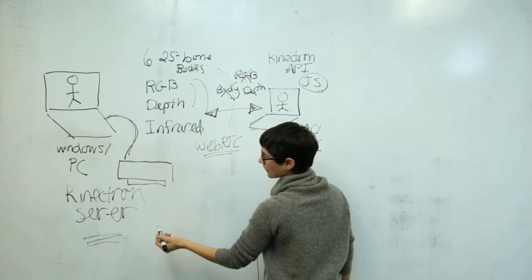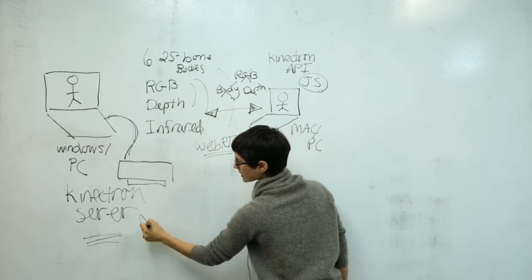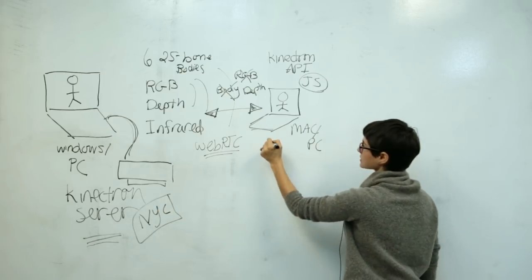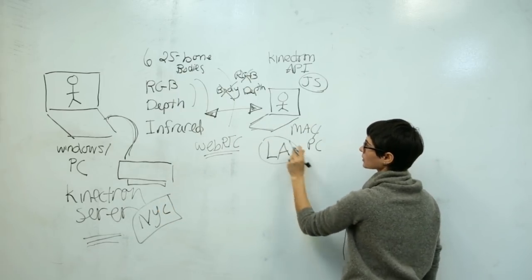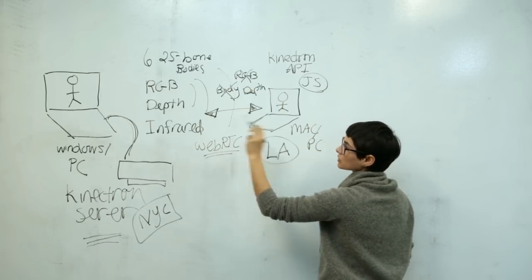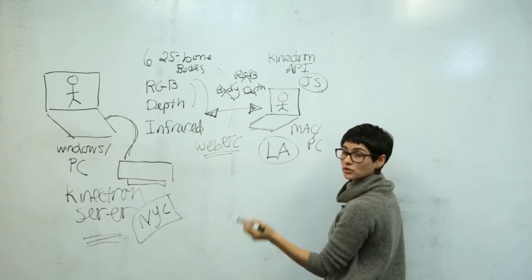So it becomes, in a way, like a remote control for this Kinect. Right, and so this Kinect may be, let's say this one is in New York City, and this one's in LA. This computer in LA that's not even connected to the Kinect, can be controlling it across the country in real time.